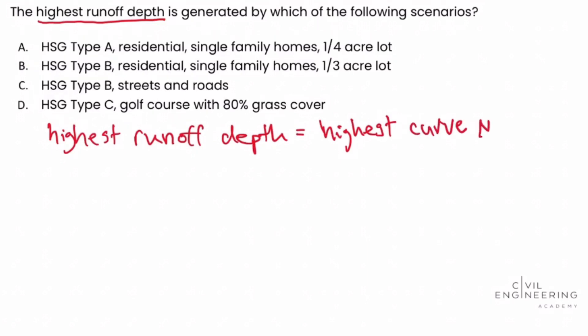So we write: highest runoff depth equals highest curve number — just as a note to keep on track while solving. Given that knowledge, we can turn to the PE reference handbook. At the time of this recording, we're using PE reference handbook version 1.1, specifically section 6.5.2.2, and the runoff curve number tables chart in that section.